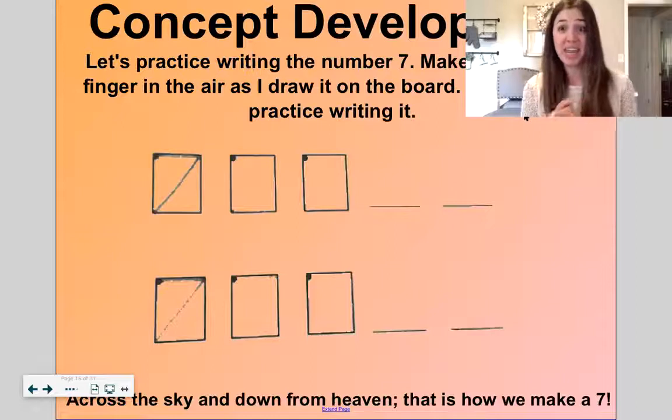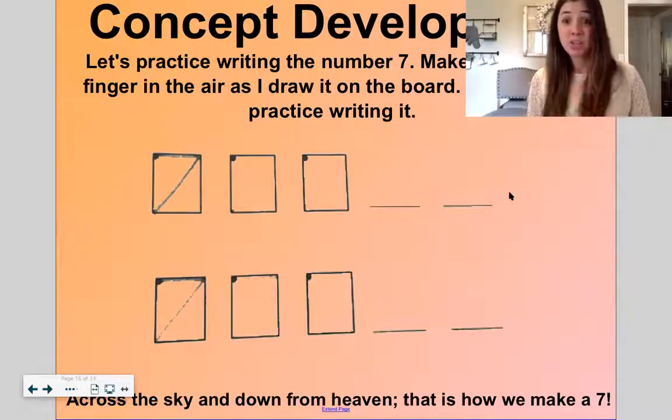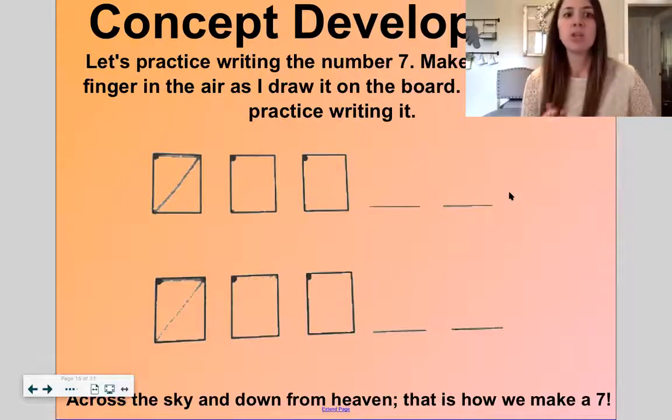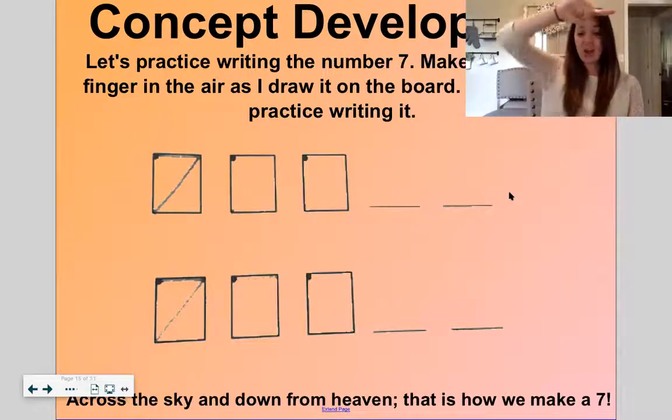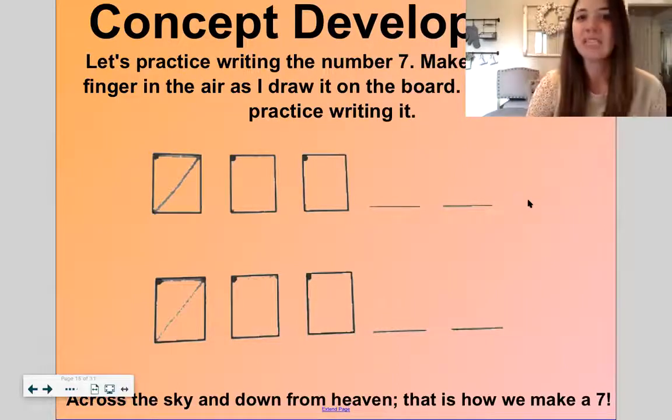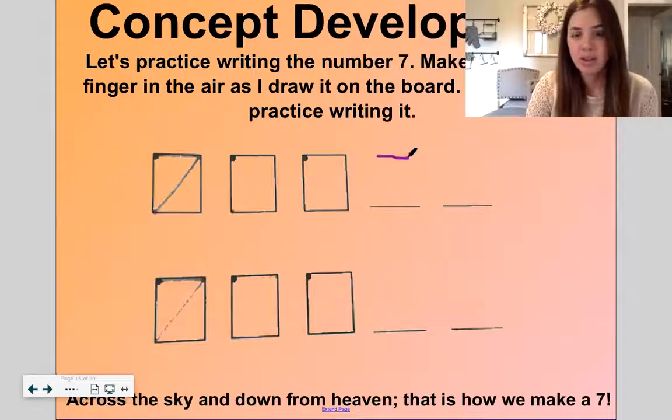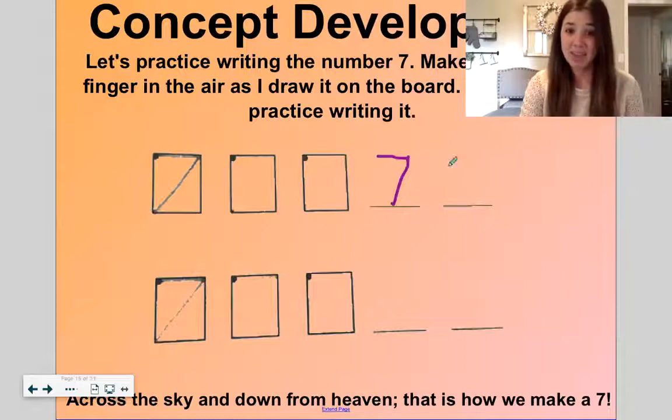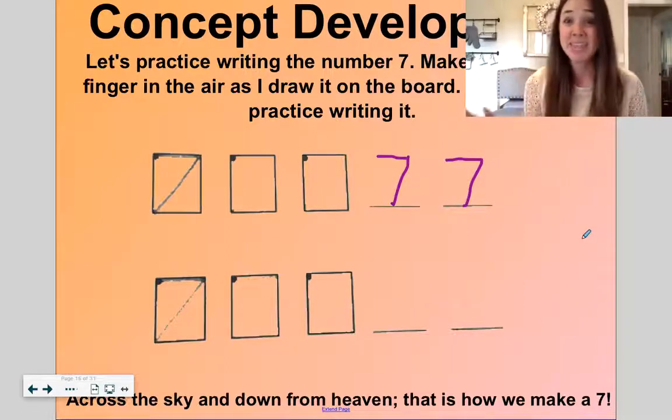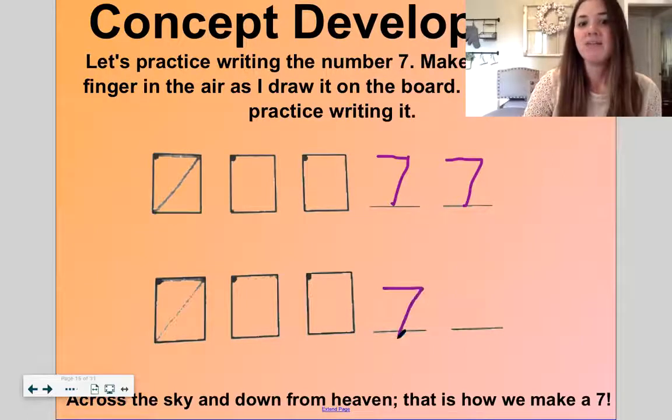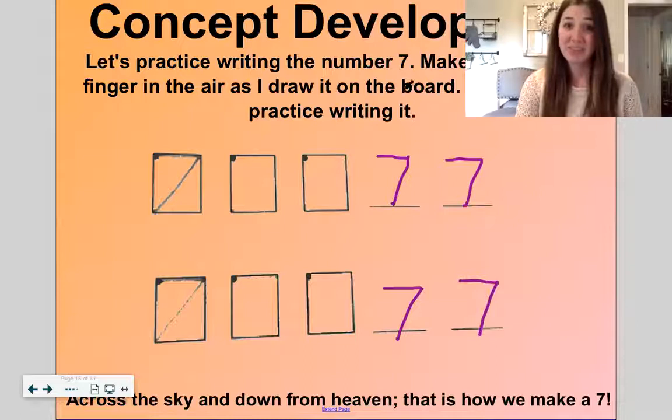Now, if you have something to write with, you'll want to get it out. If not, we will just use our fingers and write in the air. So let's practice writing this number seven. The number seven is made up of a straight line and a diagonal line. So let's make it with our finger in the air. Across the sky, down from heaven. That's how we make the number seven. Let's practice drawing it now. I'll use purple today. Across the sky, down from heaven. That's how we make the number seven. Seven and heaven are rhyming words. That's why we say it like that, so it will help us remember.